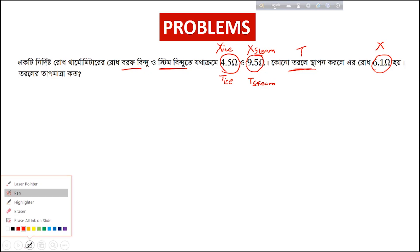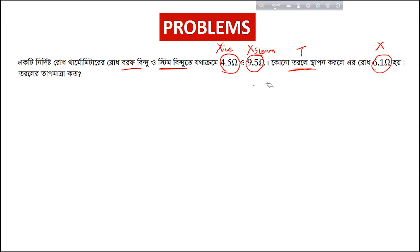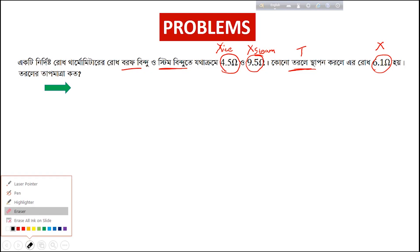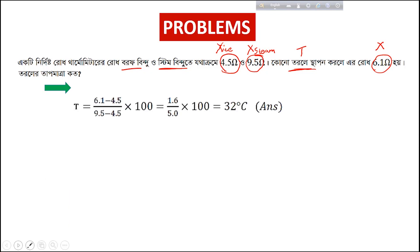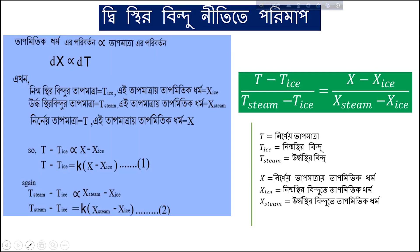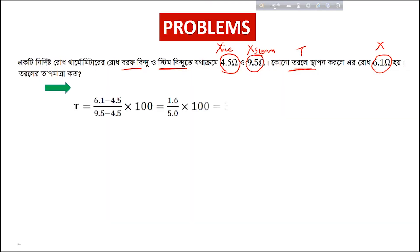You get x_steam — the steam point. Mark that value. Keep these readings in mind: at the ice point position, place 0; at that position, 0. At the steam point position, place 100; at the ice point position, 0. So this gives us t = 0 at x_i, and t = 100 at x_t.